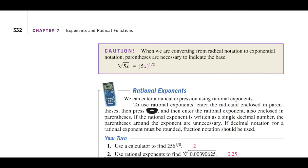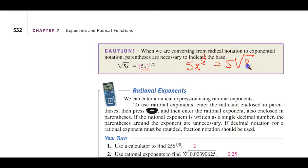Now, this is a good point I should have mentioned already: why are we putting this in parentheses? Because if we didn't, it would be 5x to the one-half, and that actually is 5 times the square root of x — because then, what is raised to a power is only the x. Where we want to include the 5, we have to include the parentheses.